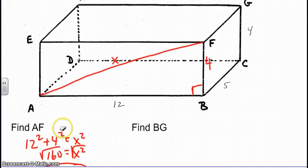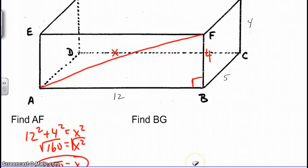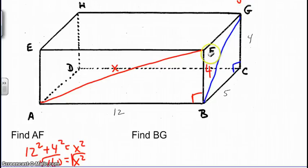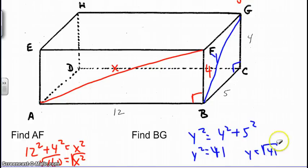Now looking at BG, switching gears, we're now referring to the diagonal on the face of F, G, C, B. Again, using the same rationale as what we used on our previous problem, we would use Pythagorean theorem here. I will call this one Y. So we're looking for Y squared equals 4 squared plus 5 squared. Y squared is going to be equal to 41. Therefore, BG is going to be equal to the square root of 41.